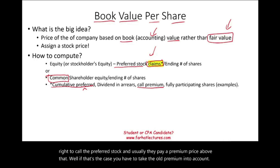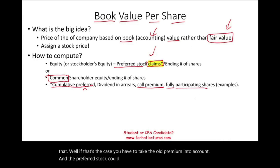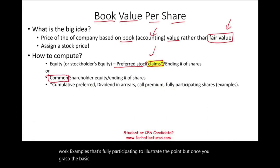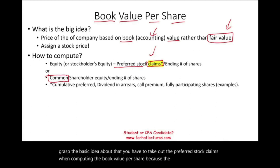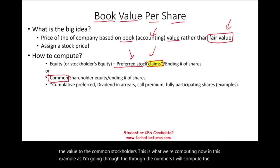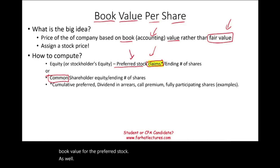The preferred stock could be fully participating or not fully participating. We'll work examples that are fully participating to illustrate the point. Once you grasp the basic idea that you have to take out the preferred stock claims when computing the book value per share — because the book value per share is the value to the common stockholders — you'll be able to see the full picture.